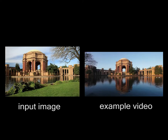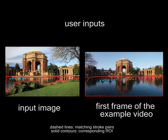For each result, we first show the input image to the left and one or more example videos used to drive the animation process to the right. Next, we show the user-marked regions in the input image and the first frame of the example video. The sparse corresponding strokes that are optionally marked by the user are shown with dashed lines.